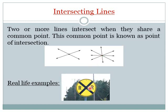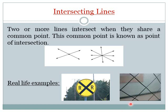See the yellow line segments which intersect at this point — that is the point of intersection. This is an example of intersecting lines. Similarly, this is one line segment, this is the second line segment, and this point is the point of intersection. This is another example of intersecting lines.